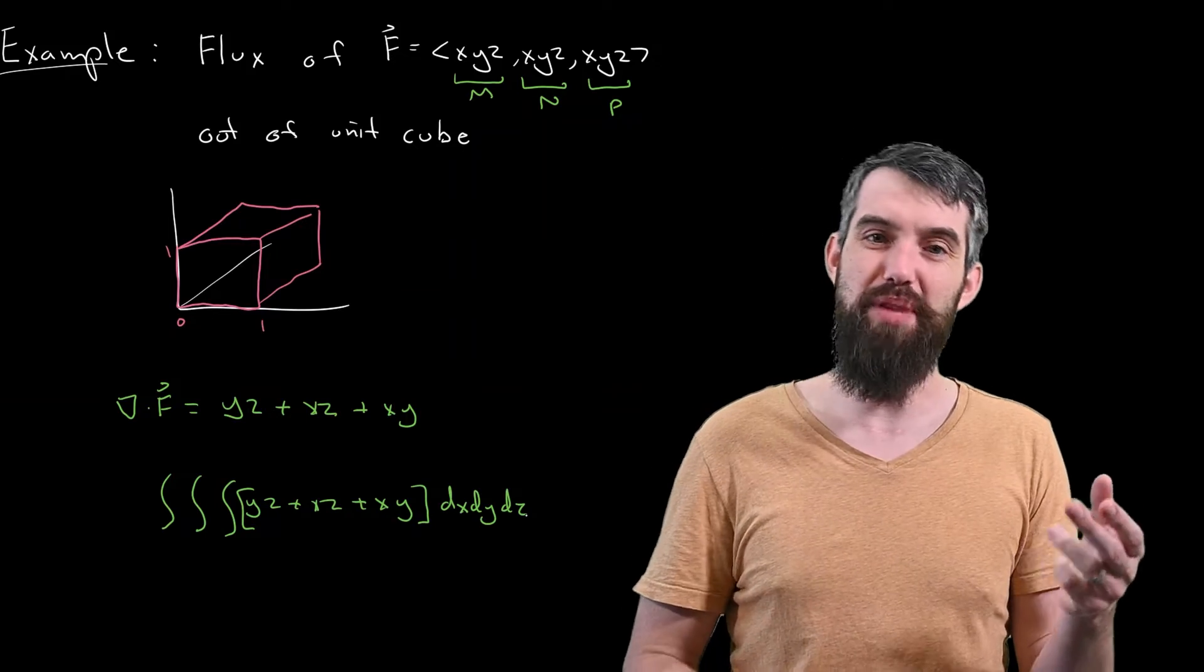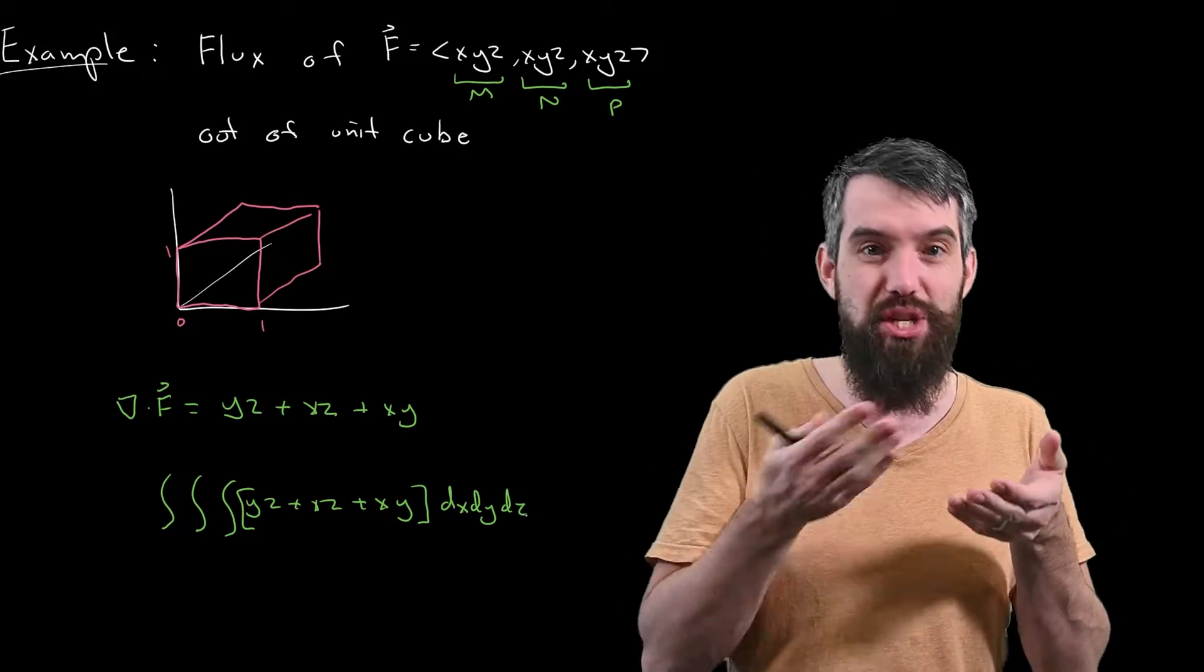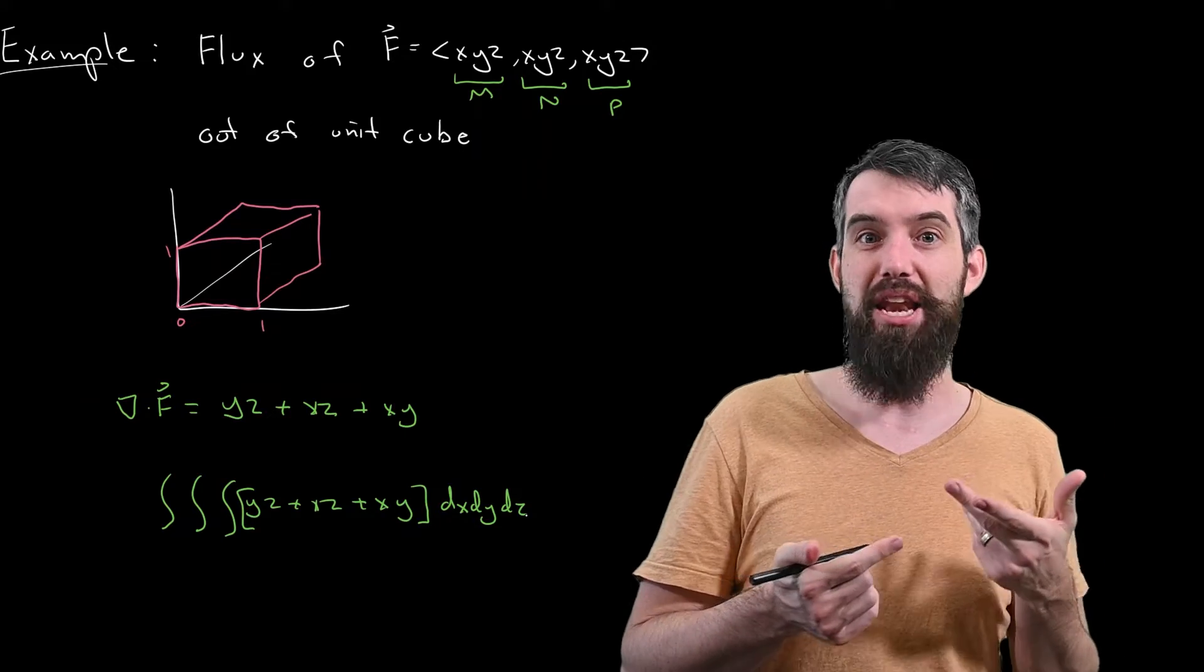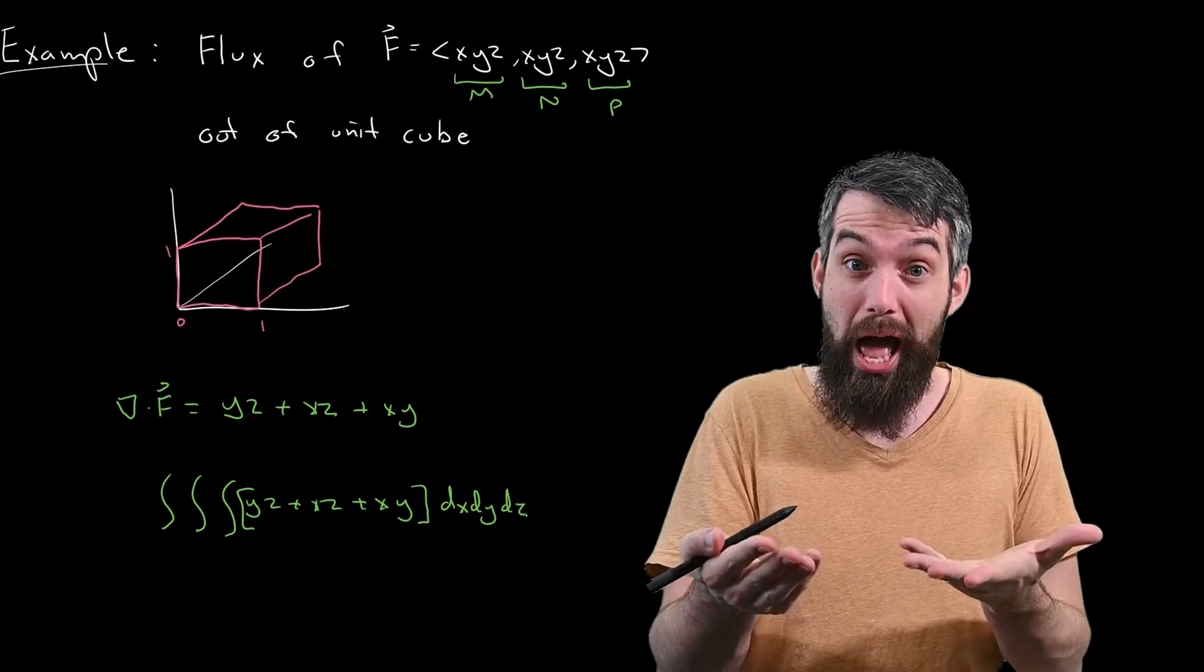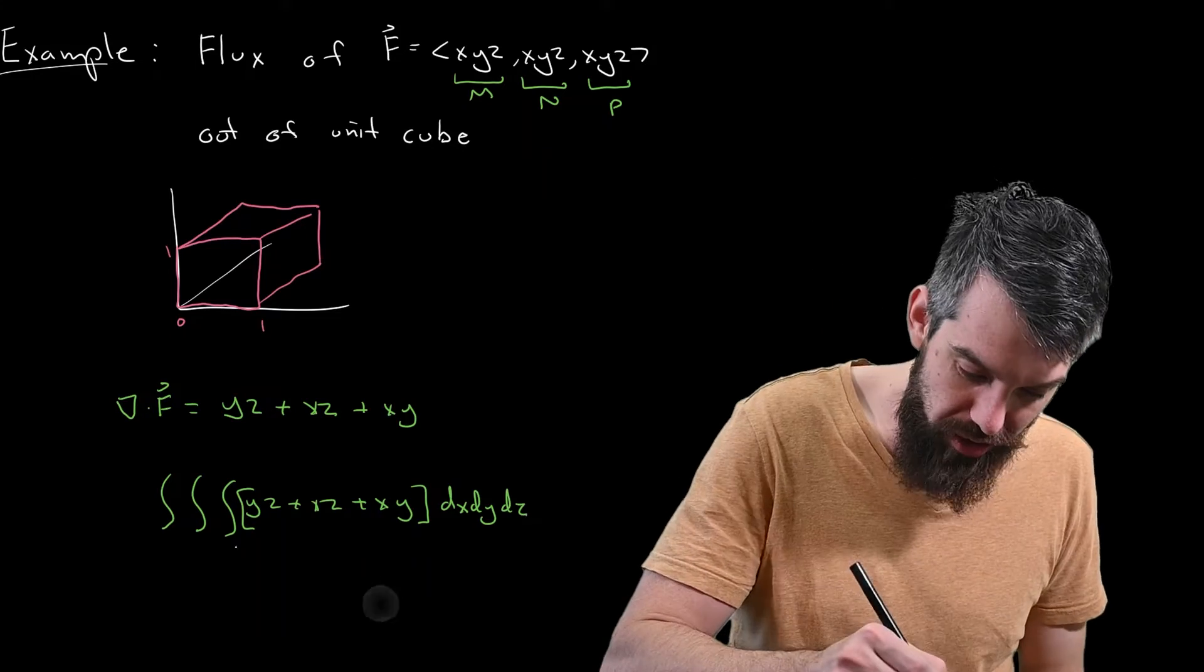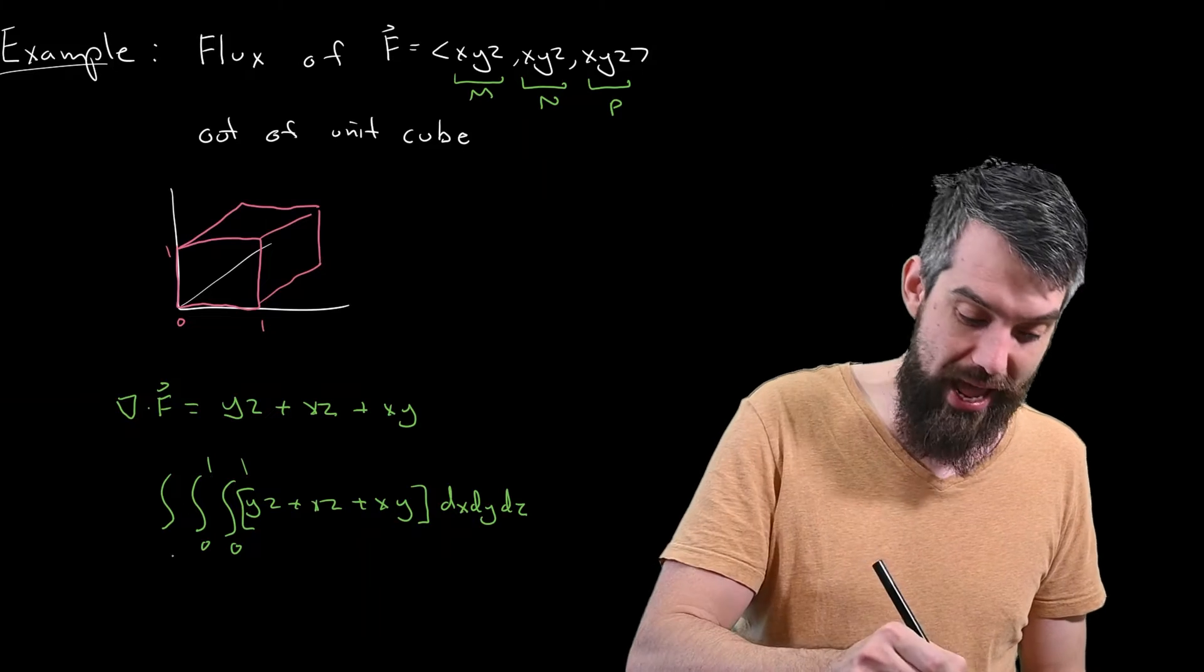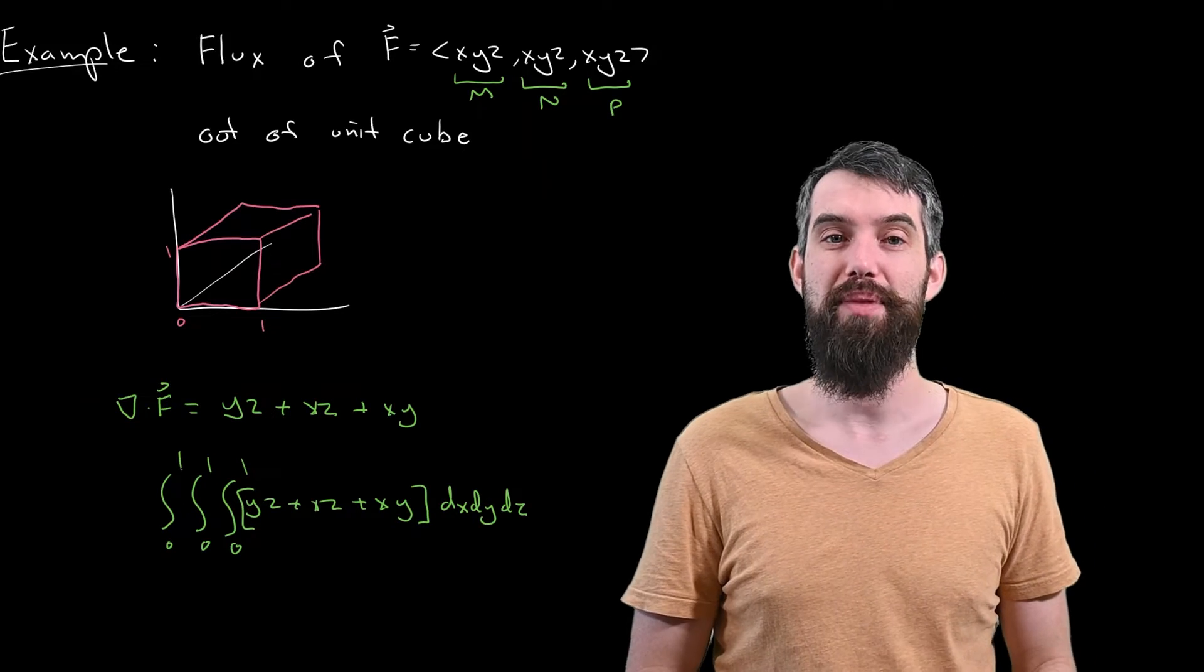In more complicated examples, maybe you're going to care about which order you do the dV. Is it dx, dy, dz, or some other permutation? And if the region was easier to describe in terms of the limits one way or the other, you might have a preference. But in here, it's the unit cube. So x is going between 0 and 1, y is going between 0 and 1, and z is going between 0 and 1. That's all I get.